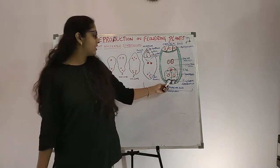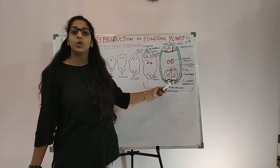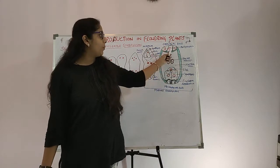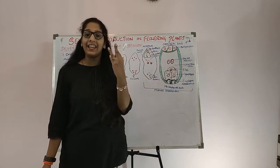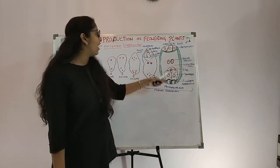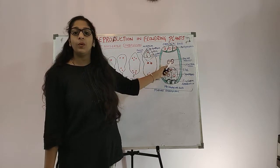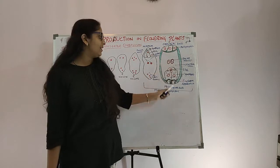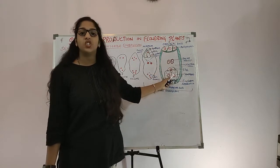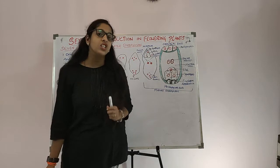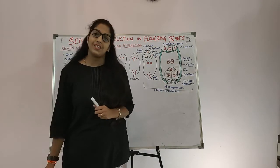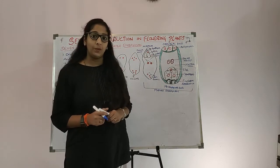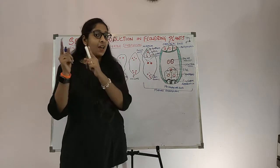You can see here the structure of the mature embryo sac. It consists of 1 egg cell and 3 antipodal cells. There are also 2 polar nuclei and 2 synergids. These are the structures found inside the embryo sac. Keep a note: the embryo sac represents the female gametophyte, while pollen grains represent the male gametophyte.